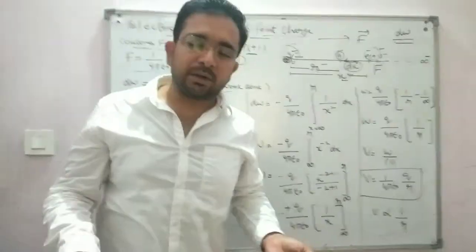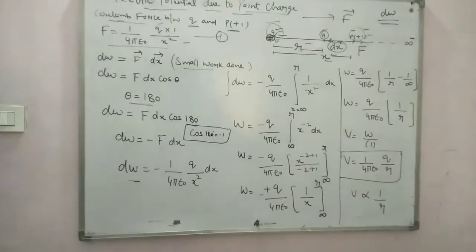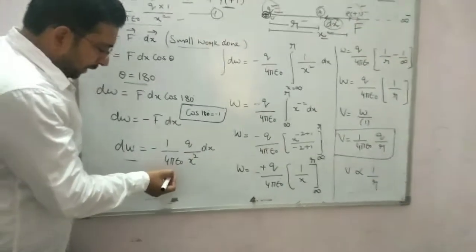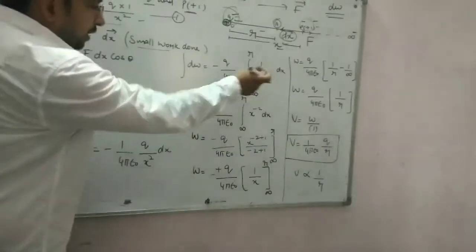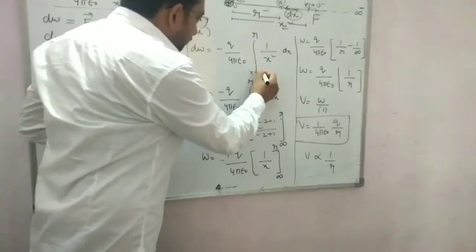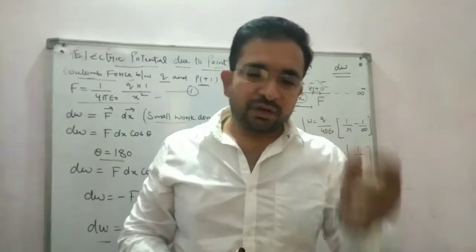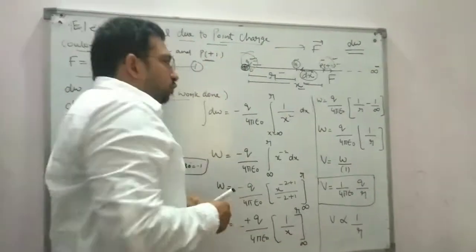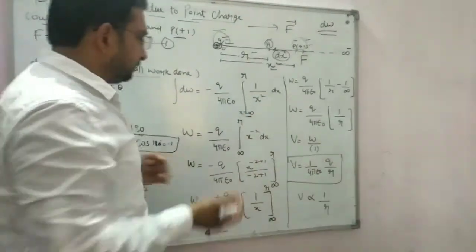For total work done, we integrate: W = ∫dW. We integrate the term −(Q/4πε₀) × (1/x²) dx. By definition, the work done is to bring the unit positive test charge from infinity to any particular point where we find the electric potential, so the limits go from infinity to r.